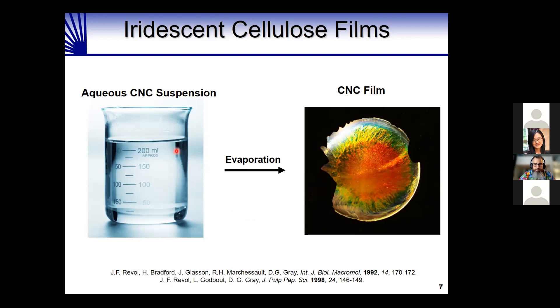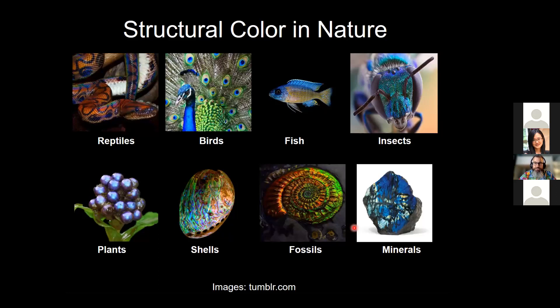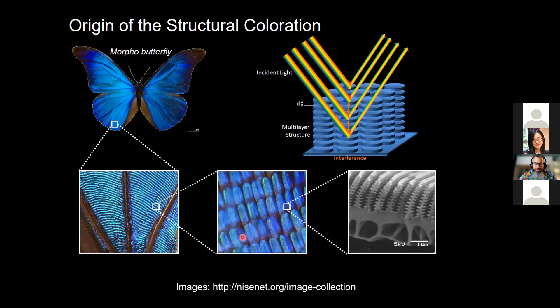My interest in cellulose nanocrystals arises from a very special property. On the left is a dilute beaker of cellulose nanocrystals in water — not surprisingly, a colorless solution. But if you pour this solution onto a surface and let the water evaporate, you get a colored, iridescent film on the right. There's no dye or pigment — instead this is a beautiful example of structural color, found in nature in fish scales, bird feathers, some berries, and shells, where coloration comes from structural order at the nanoscale.